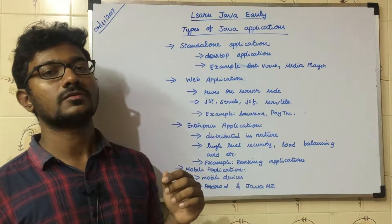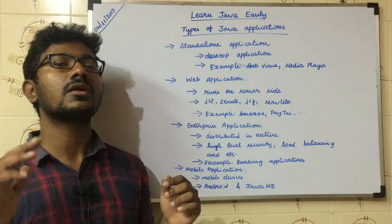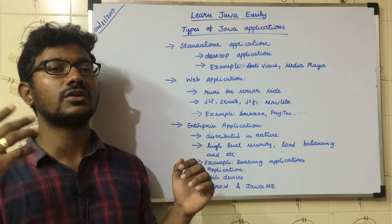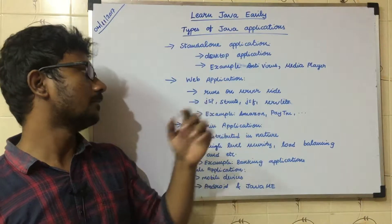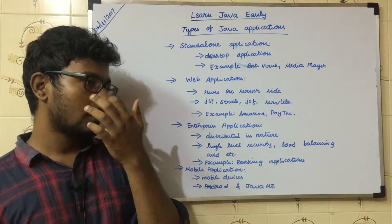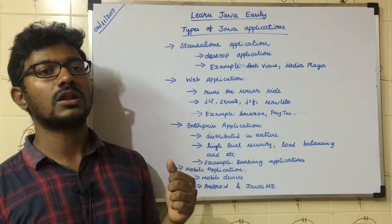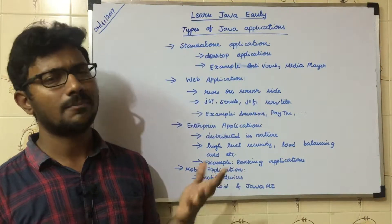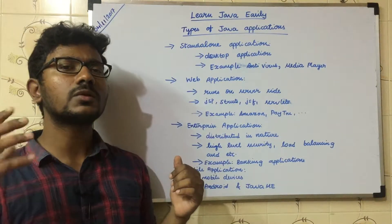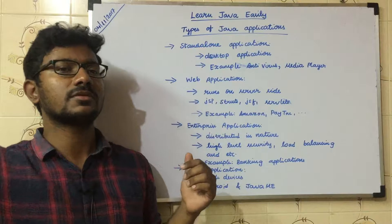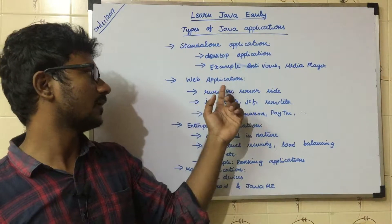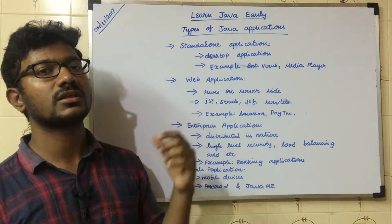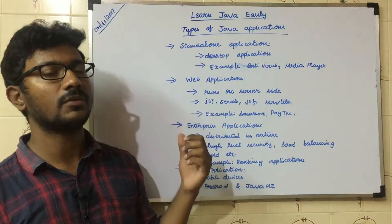The second type is the web application. A web application means something that is running on some other machine, but you are trying to access it. For example, when you use online websites like Amazon.com, Amazon.in, or Paytm, you are accessing them from some other machine. That's called a web application. JSP, Struts, and JSF are used to support and develop web applications.